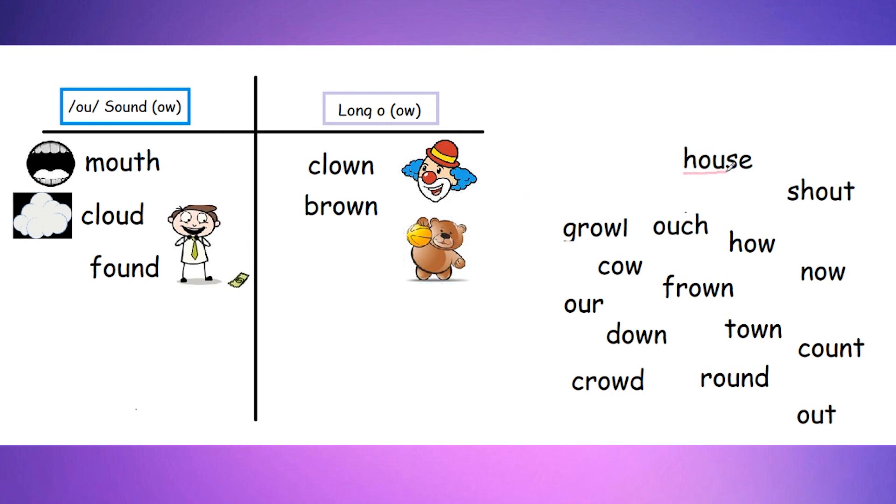Next word is going to be house. And again, we're looking at that U. So we would place it with our OU vowel connection sound, or house. And a house is something that you guys live in. So there we have it, a house.